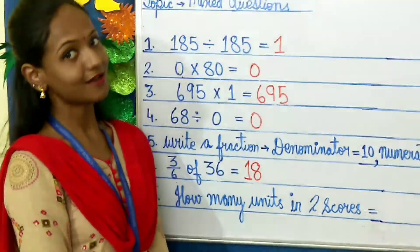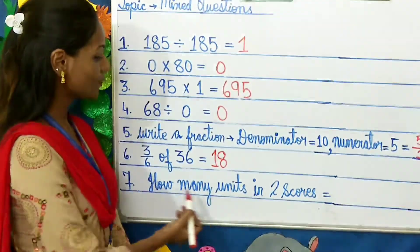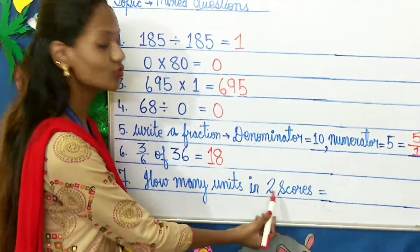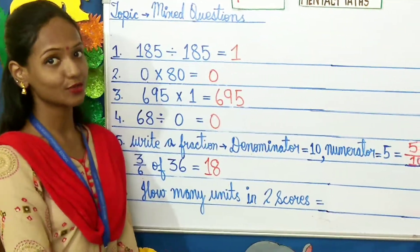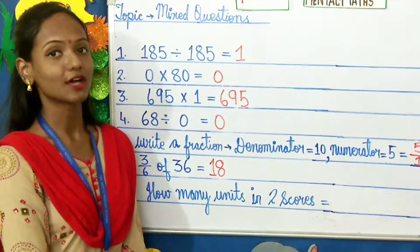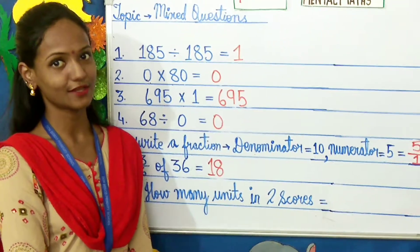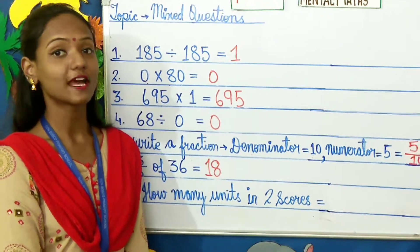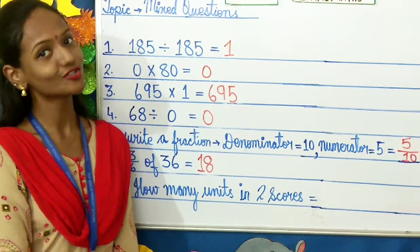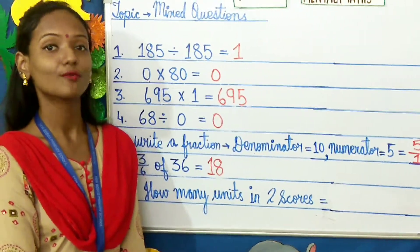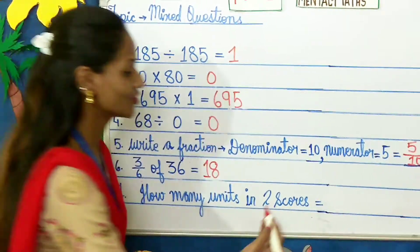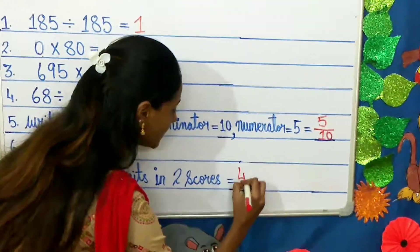Coming to the last question. How many units in 2 scores? Now, children, 1 score equals 20 units. So, 2 scores, that will be 20 into 2. 20 into 2 will be 40 units. So, your answer is 40 units.